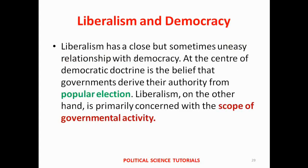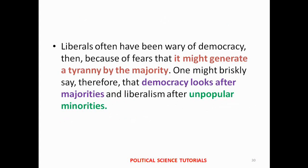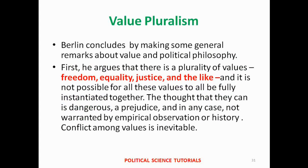Berlin thinks that liberalism has a close but sometimes uneasy relationship with democracy. At the center of democratic doctrine is the belief that governments derive their authority from popular election. Liberalism, on the other hand, is primarily concerned with the scope of governmental activity. Liberals fear that democracy might generate a tyranny by the majority, while liberalism looks after minorities because here the individual is of primary importance. In his concluding remarks, Berlin dealt with the plurality of values, or value pluralism.